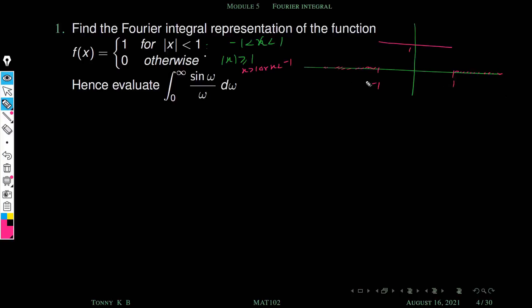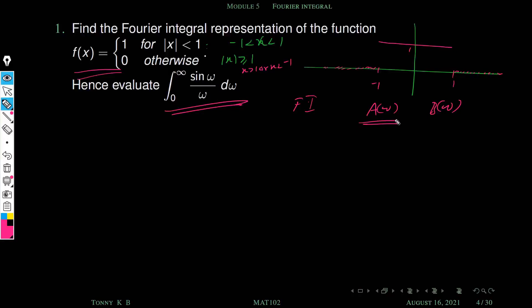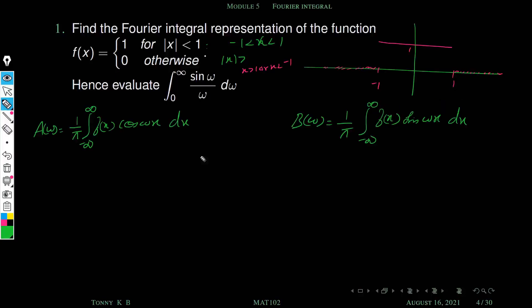Our aim is to find the integral ∫₀^∞ sin(ω)/ω dω using the Fourier integral representation. First we must find the Fourier integral representation of the given function by finding a(ω) and b(ω). Then we can write the integral representation. So first we are going to find a(ω). The formula is a(ω) = (1/π) ∫₋∞^∞ f(x)cos(ωx) dx, and similarly for b(ω).